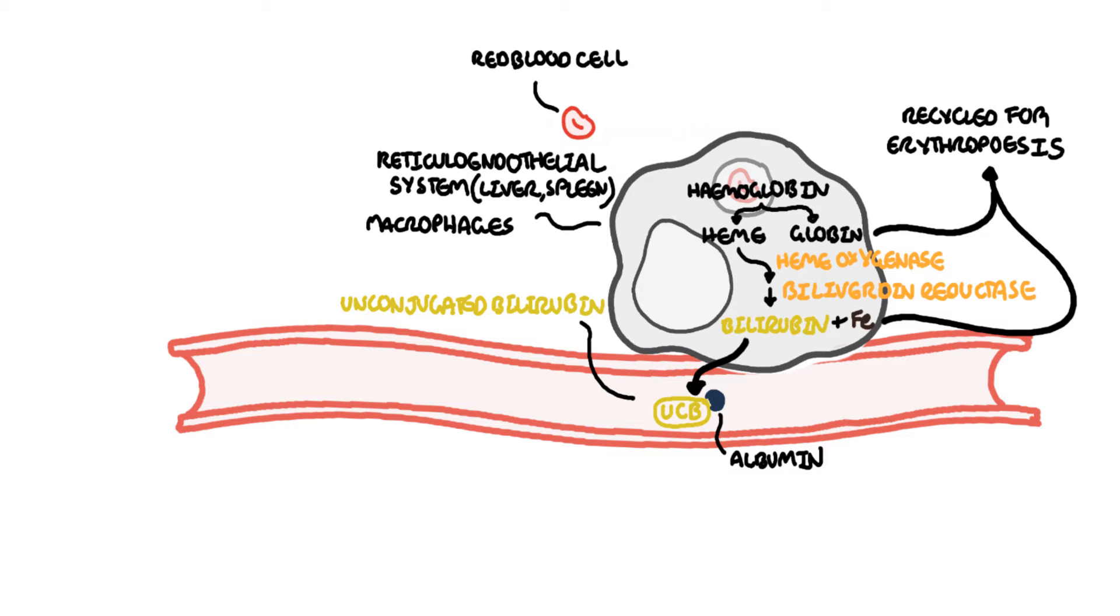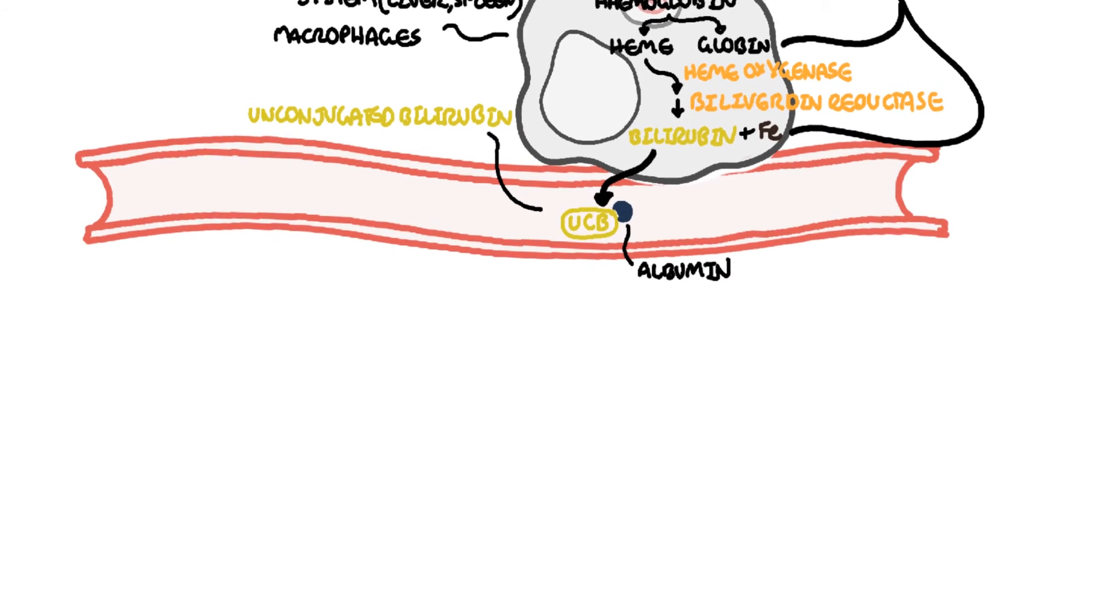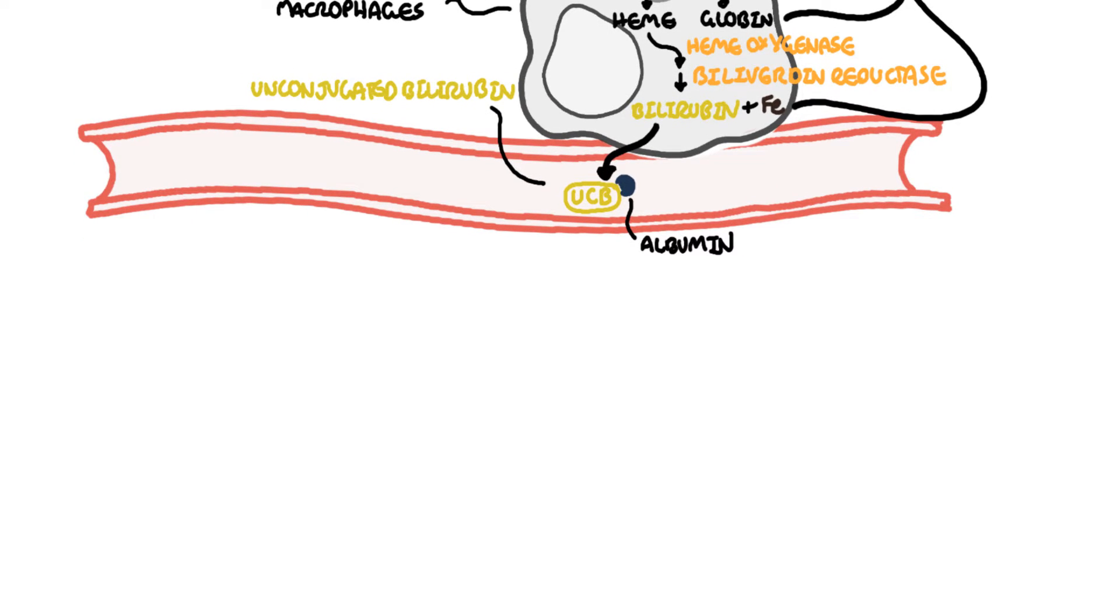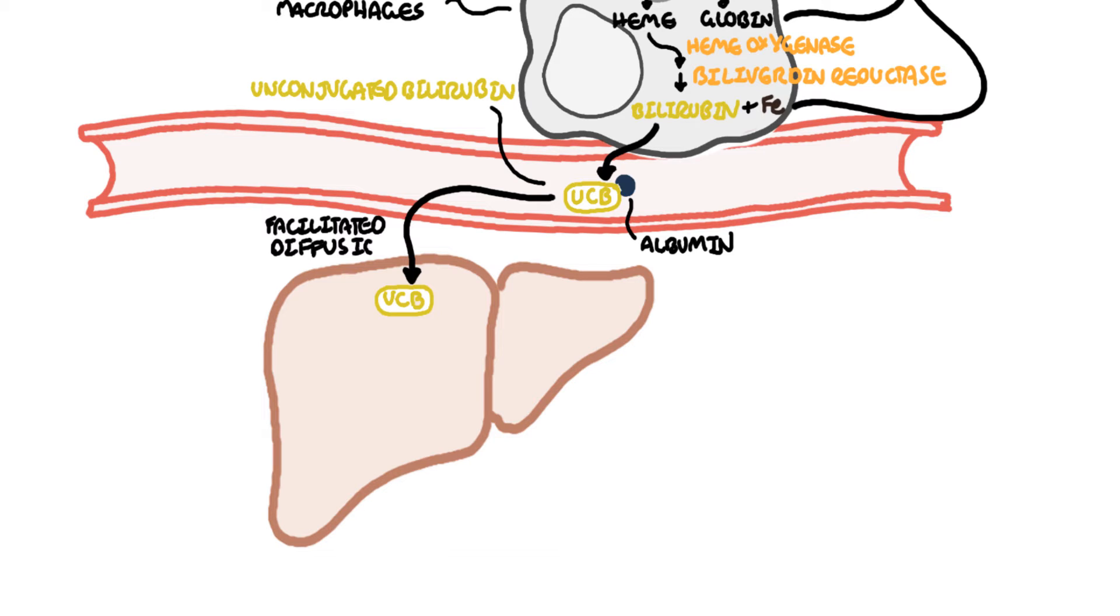Bilirubin is also formed by the breakdown of other things such as myoglobin and cytochrome enzymes. This albumin-bilirubin complex circulates around and then enters the liver system where it disassociates. The unconjugated bilirubin is taken up efficiently by the hepatocytes while the albumin remains in circulation.